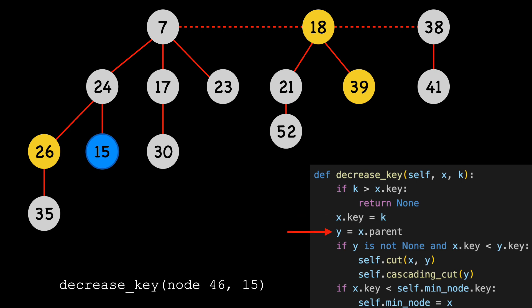We set X's key to the new value 15. We set a pointer to X's parent, 24, and call it Y. I'll color Y green. We then check to see if our min heap property is broken. Obviously, it is, as 15 is less than 24.